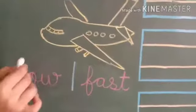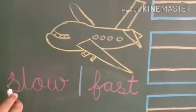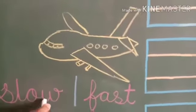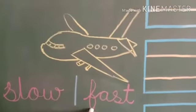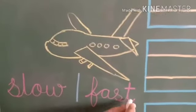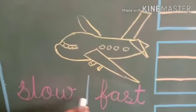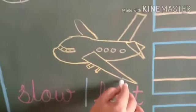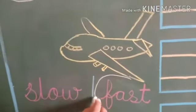Then after, aeroplane. S-L-O-W, slow. And F-A-S-T, fast. Aeroplane kaise chalta hai? Slow ya fast? Fast. Aeroplane is a fast vehicle.